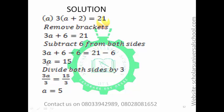So 3a equals 15. The next thing is to make a stand alone. The number attached is 3 — it is multiplication that connects it — so use division to separate it. Divide both sides by 3: 3a divided by 3 equals 15 divided by 3. The value of a is 5. To check: substitute 5 for a — 5 plus 2 is 7, and 3 times 7 is 21. Correct.